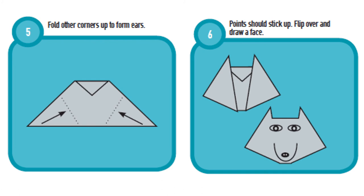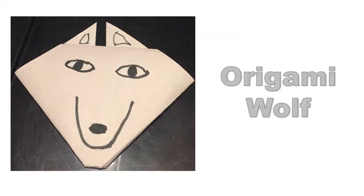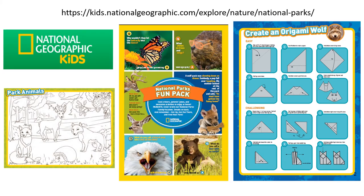Anytime during this, if I went too fast, you have the luxury of pausing, which you couldn't do when we did it in person. This is what the finished product would look like. I did not use printer paper — I used construction paper that was gray. The only problem using construction paper is it's a little thicker and might be a little harder to fold, but it worked out well. Don't forget to go to the National Geographic Kids website and download the fun pack. You see on the right the directions for the origami wolf — we did the top one that says easy. If you want a challenge, you can try to make the other wolf.